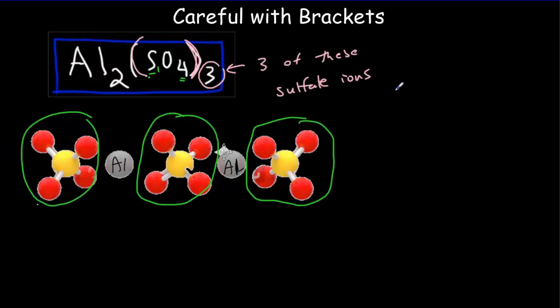So if we go to count the atoms up, aluminum just has two. The sulfur has one atom per ion, but three ions. So here we're going to get three of these sulfur atoms.